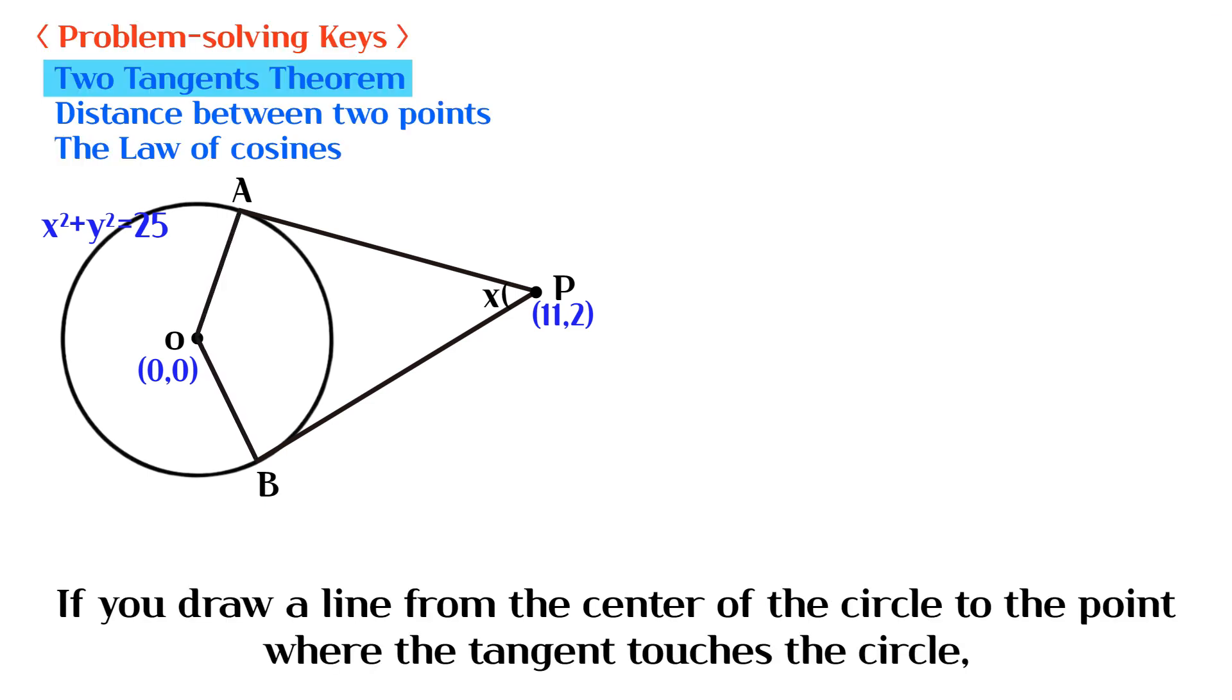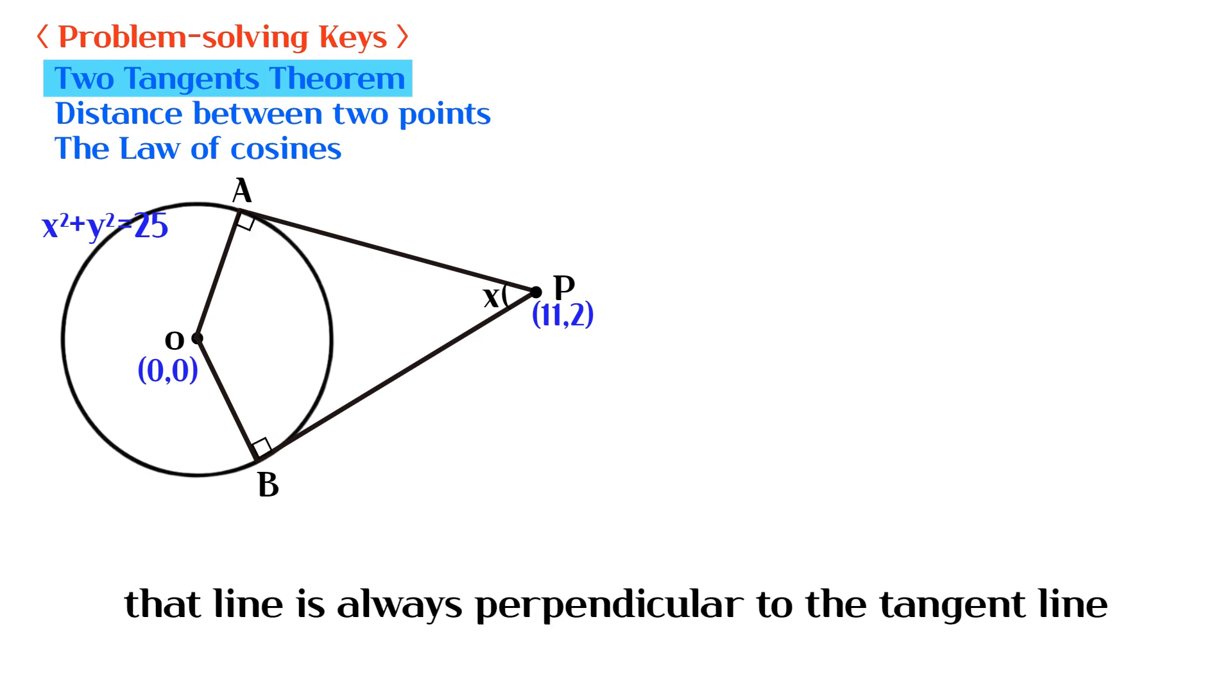If you draw a line from the center of the circle to the point where the tangent touches the circle, that line is always perpendicular to the tangent line.